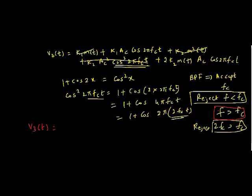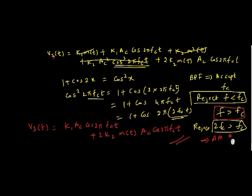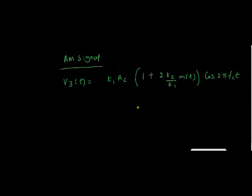This is effectively my V3(t) because V2(t) consists of all equations and all terms. V3(t) will reject all the frequencies which is less than fc and greater than fc. My final AM signal will be K1*Ac*cos(2πfct) + 2*K2*m(t)*Ac*cos(2πfct). This is my AM signal. This is my final signal.